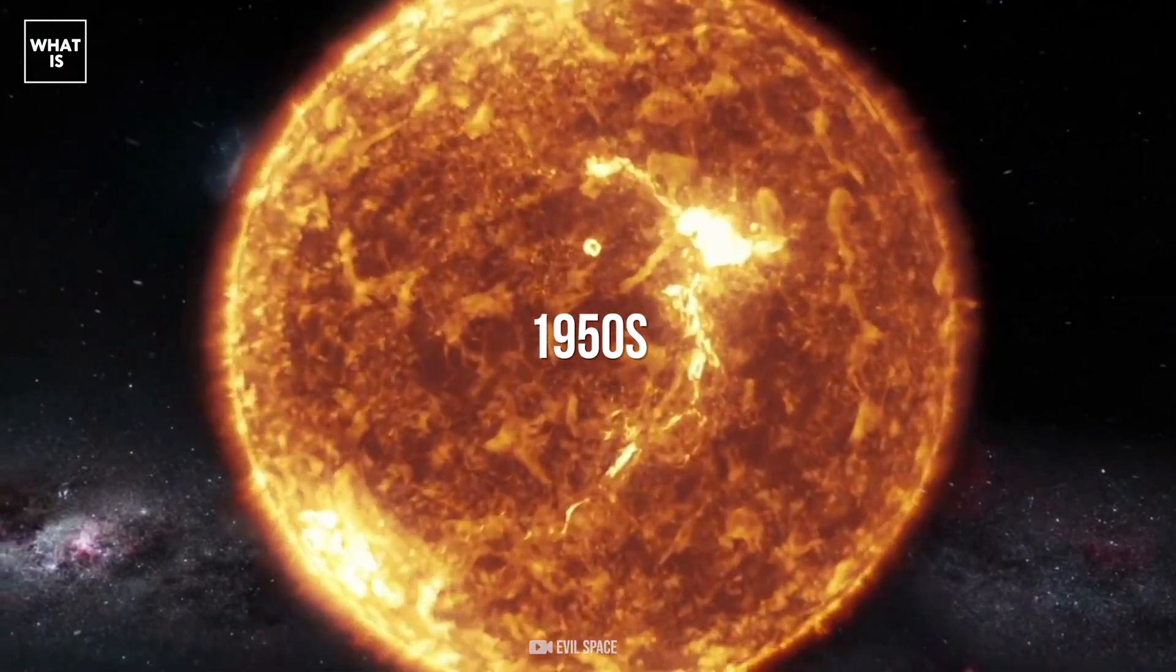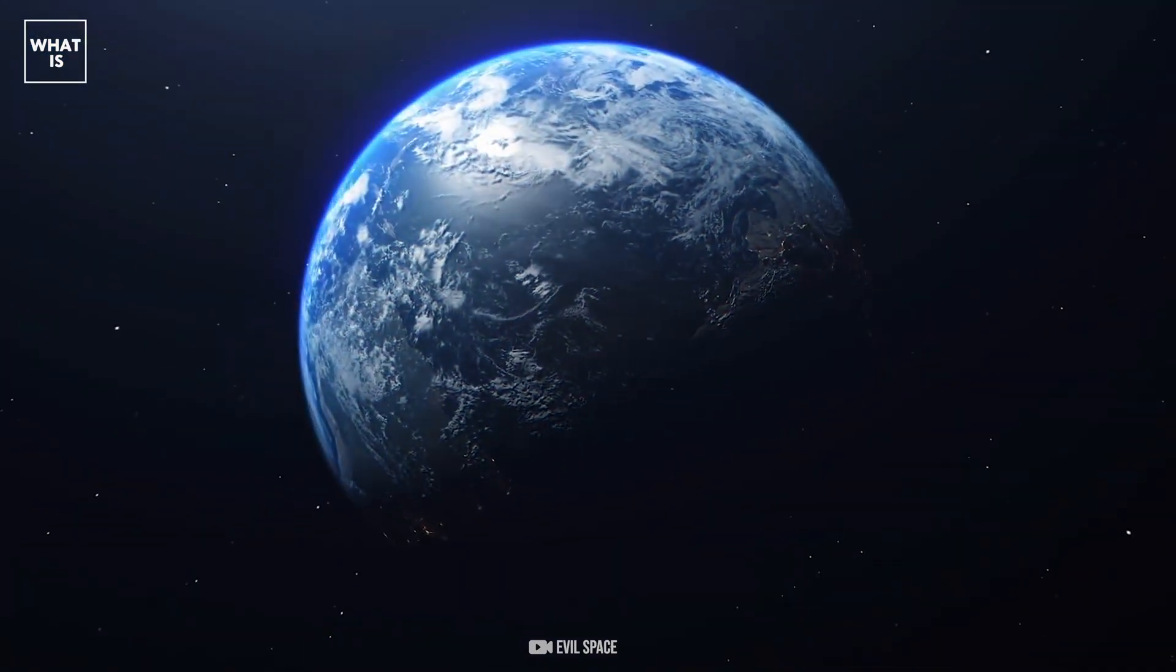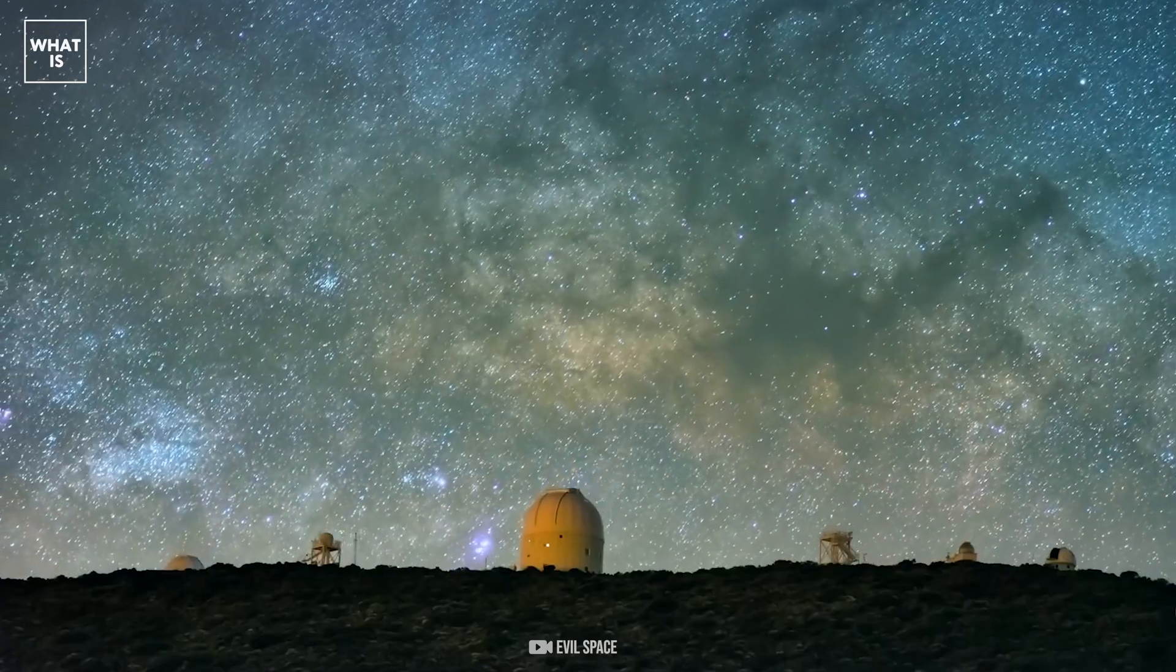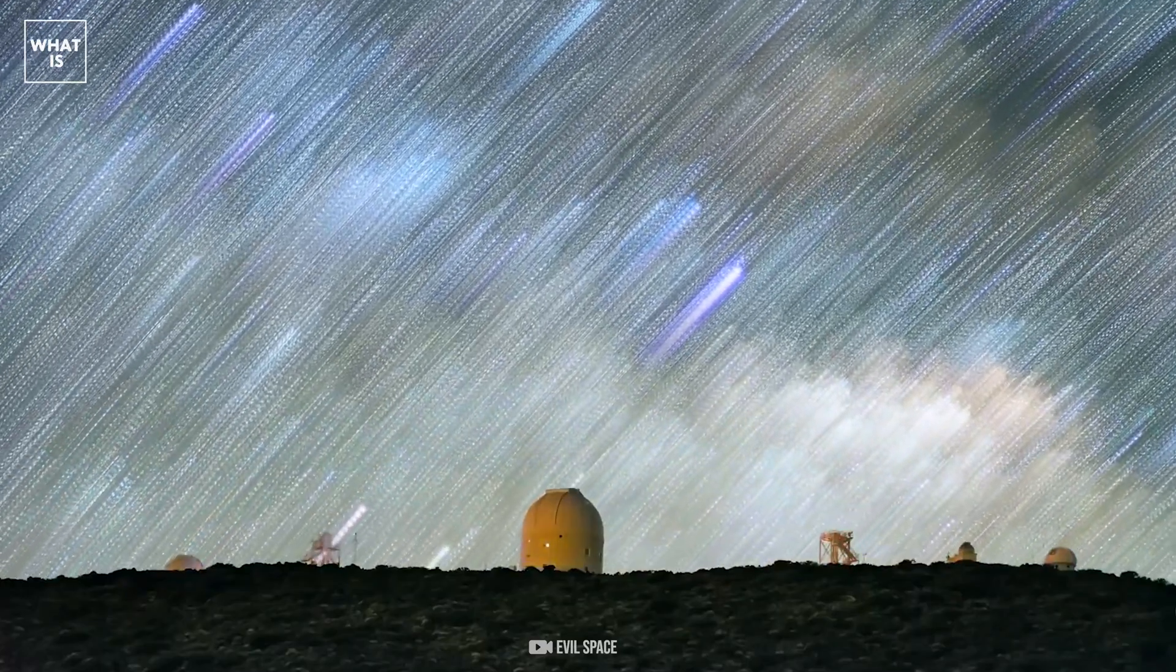In the 1950s, scientists figured out that the solar wind blows away from the Sun towards the edges of the solar system. They also, for the first time, came to the conclusion that we live in the atmosphere of the star.